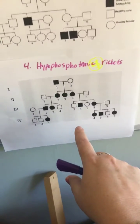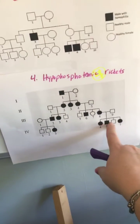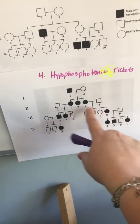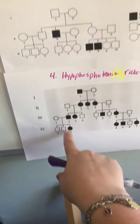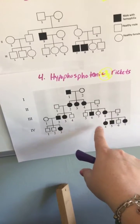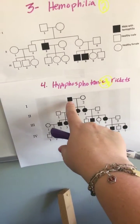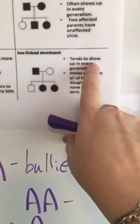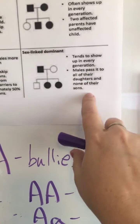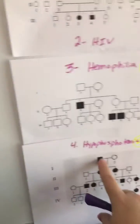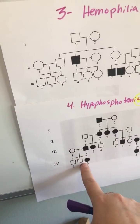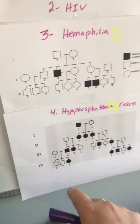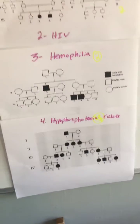In this fourth pedigree, every single generation has it — the kid has it, the parent has it, the kid has it, the parent has it — so that one is going to be dominant. You can also see the male is passing it on to his female daughters. Going back to our chart, sex-linked dominant shows up every generation and males pass it on to their daughters and none of their sons. So that is why this one is X-linked dominant.